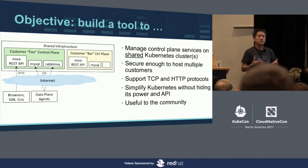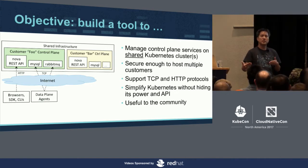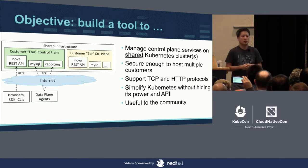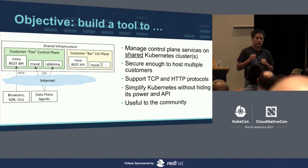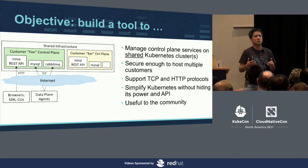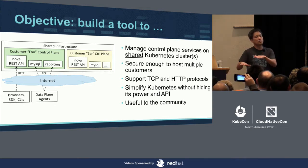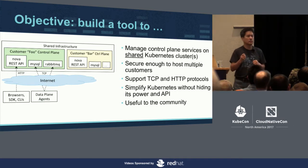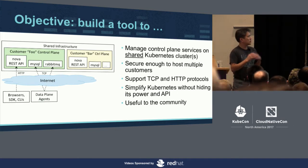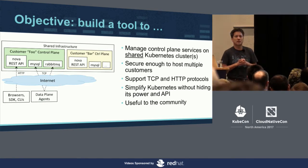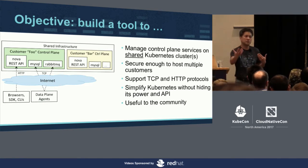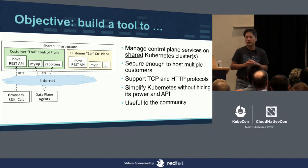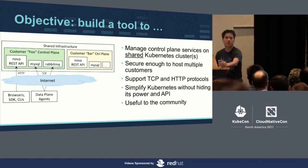Since our ops team is ramping up on Kubernetes, and Kubernetes can be pretty complex, we also want our tool to automate as much as possible — automate repetitive tasks, abstract away some of the complexities of Kubernetes without hiding its true power. And finally, we wanted to build something useful not just to us but also to the community. That is why we started an open source project.